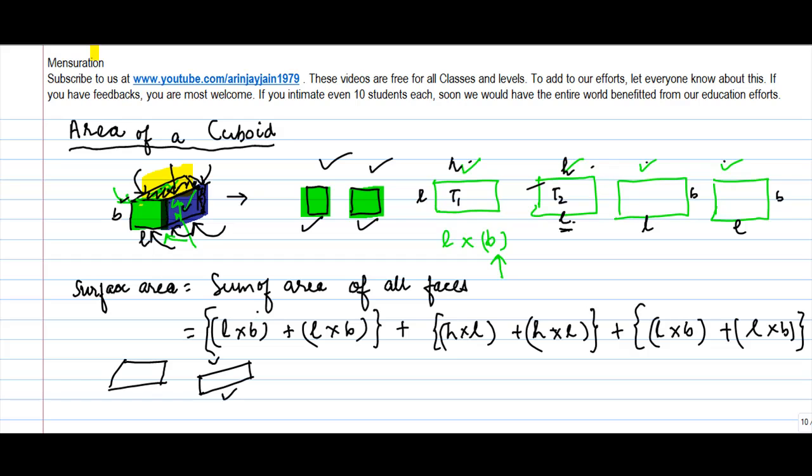So maybe what I can do is I can keep B as common, and instead of H let me use a different terminology. This is H, which is this side.